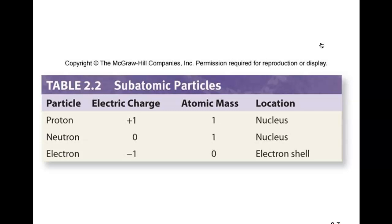Here's a chart to summarize. Protons, a positive charge, atomic mass of one, found in the nucleus. Neutrons have zero charge, or are neutral, have an atomic mass of one, and also found in the nucleus.